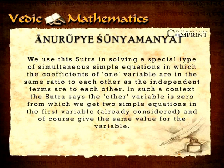In such a context, the sutra says the other variable is zero, from which we get two simple equations in the first variable which is already considered and of course gives the same value for the other variable.